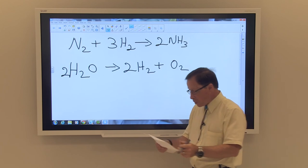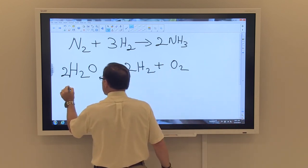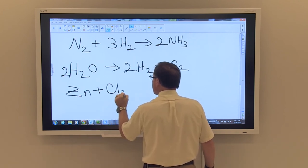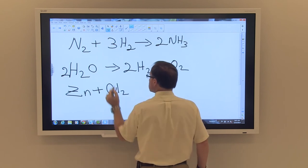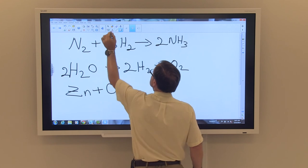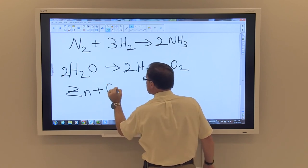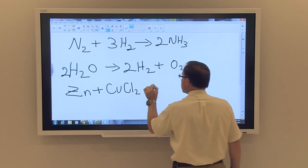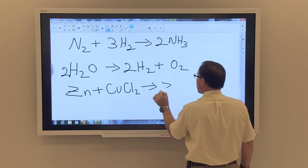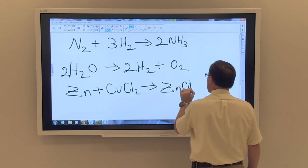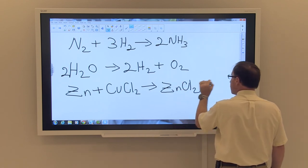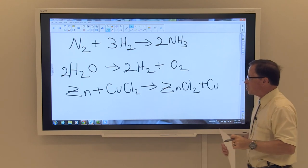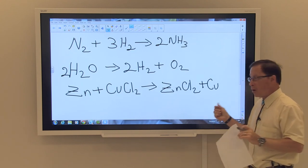A single replacement reaction would be something like zinc plus copper chloride giving zinc chloride plus copper. In that instance, zinc is replacing the copper ion in the solution.